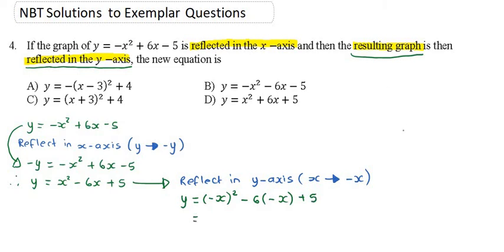If I take out my brackets now, because I want to simplify this — a negative times a negative is a positive, so it's going to just be x squared. A negative times a negative there is also a positive, so we're going to have plus 6x plus 5. Let's see if we've got anything like that above. Yes, we do. It is D: y equals x squared plus 6x plus 5.